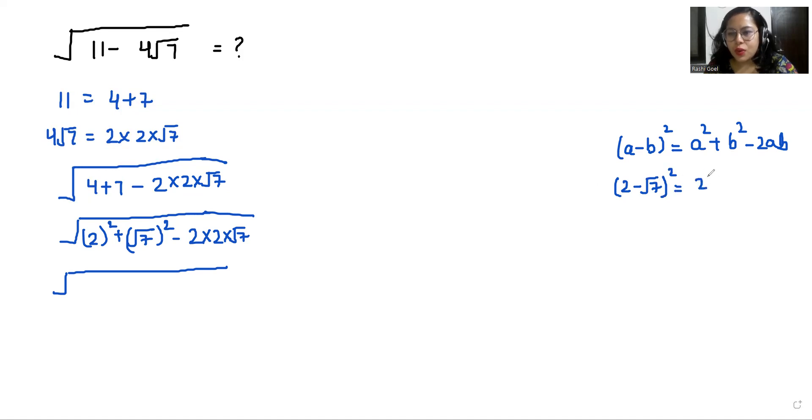So it becomes 2² + (√7)² - 2 × 2 × √7. So we can replace this by (2 - √7)².